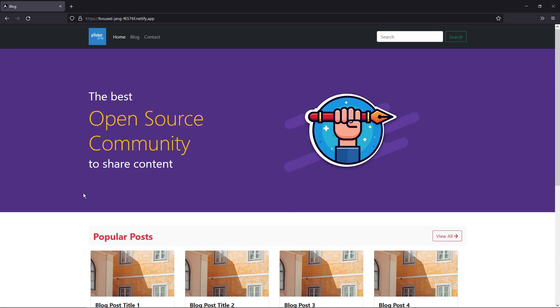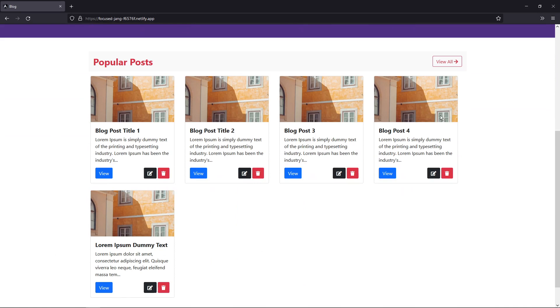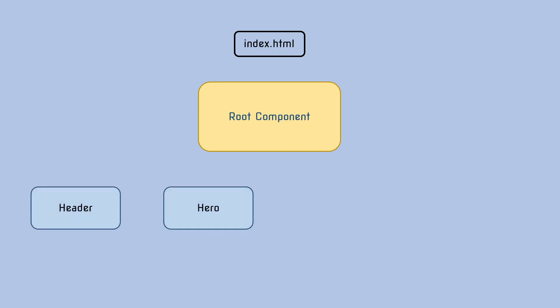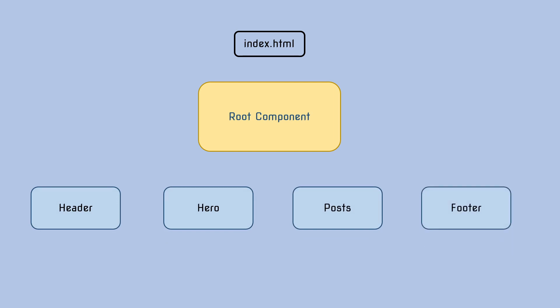Inside of these, there are child components as well. Like in this post component section, we have individual posts — so that in itself is a component. A combination of multiple post components is going to create the post section. You can think of the structure as something like this: at the top you have the index.html file, below that you have the root component — which is app-root given to us by default by Angular — then we have a header component, a hero component, a post component, and a footer component. And inside the post component, you have another child component called post.